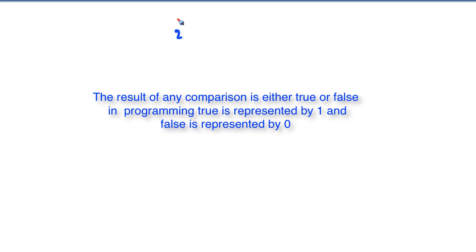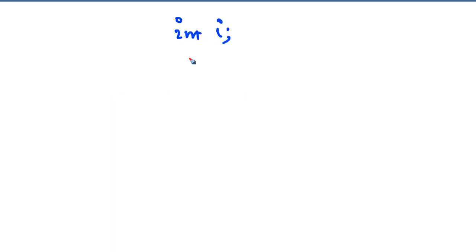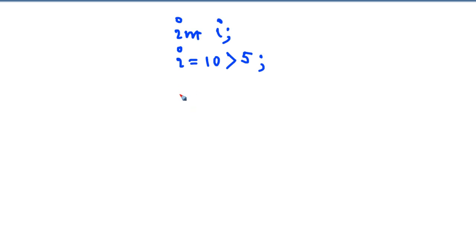That means if I have a statement something like this — say i is an integer variable and we have written 10 greater than 5 — what's the value of i after this operation? Since 10 is indeed greater than 5, the greater than operator is going to compare them and find that yes, 10 is greater than 5, so it's going to return 1. So the value of i is going to be 1 after this particular operation.